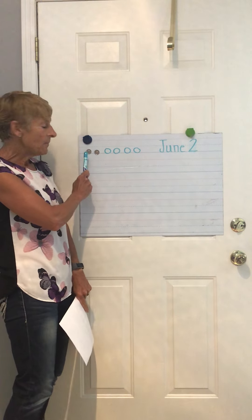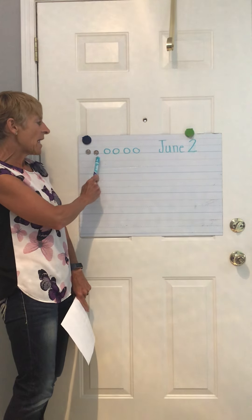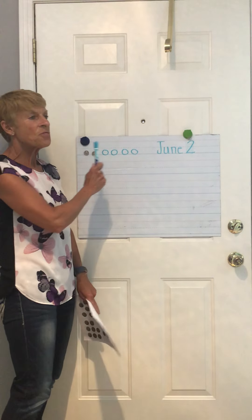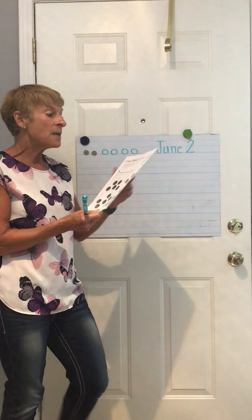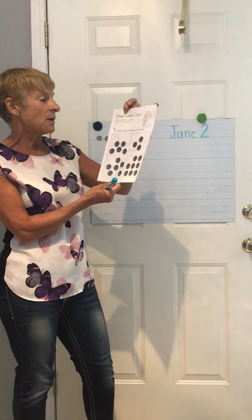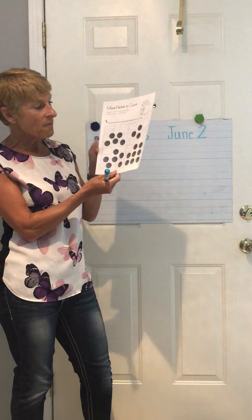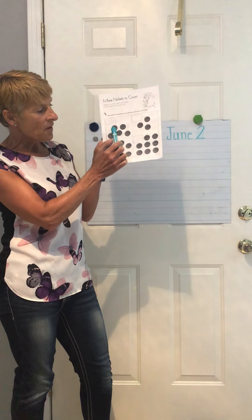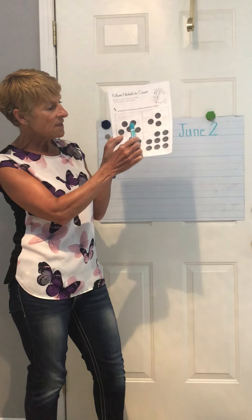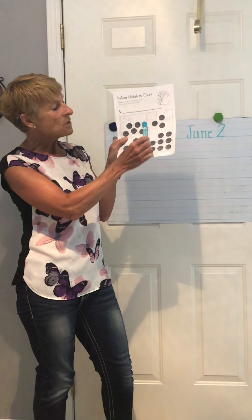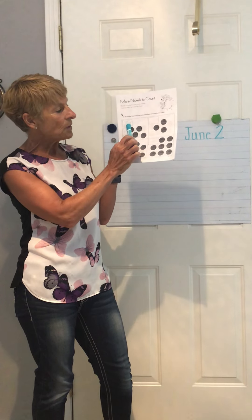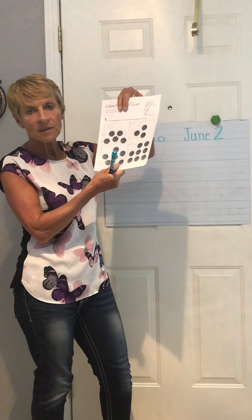So if we had one nickel: five, ten, fifteen, twenty, twenty-five, thirty. Today you're going to be counting nickels. It says beaver is ready to count more nickels — can you help her count by five? So you're going to go five, ten, fifteen, twenty, twenty-five cents. You count up how many nickels counting by fives, put the number, and then don't forget the cent sign.